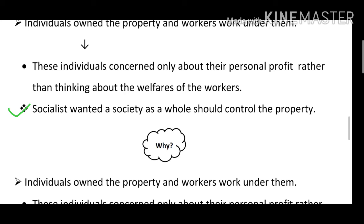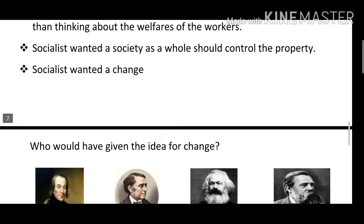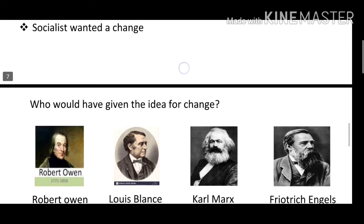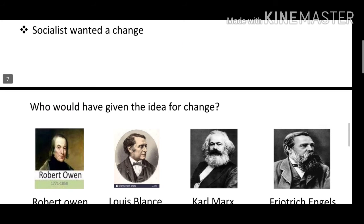Socialists wanted society as a whole to control the property. They wanted that an individual should not control the property — it should be distributed equally to all sections. Socialist kya chahte the ki yeh jo cheezein hain, yeh samaj mein, society ka distribution equal ho. Toh socialist wanted a change — kaisa change chahte the socialist?